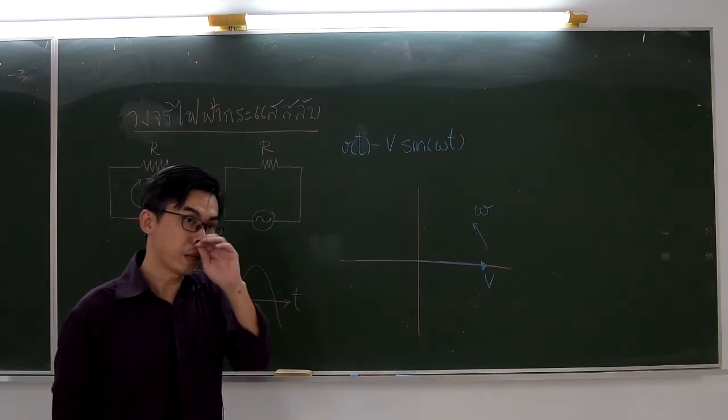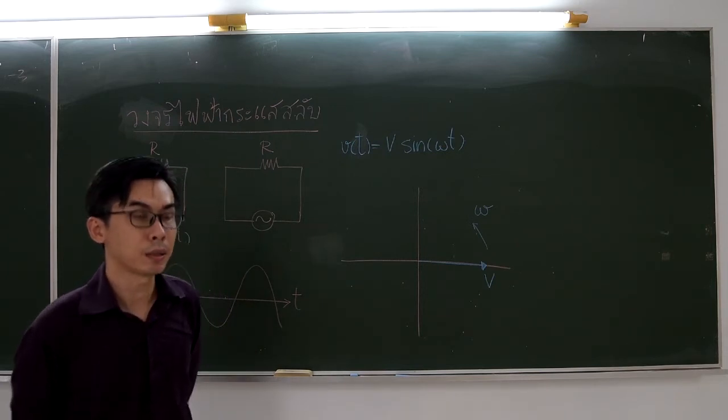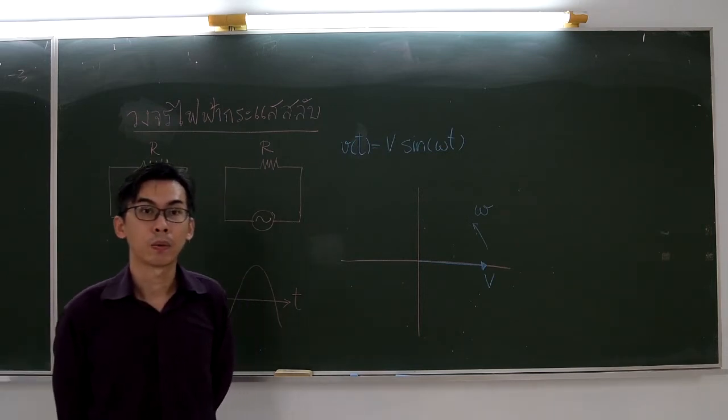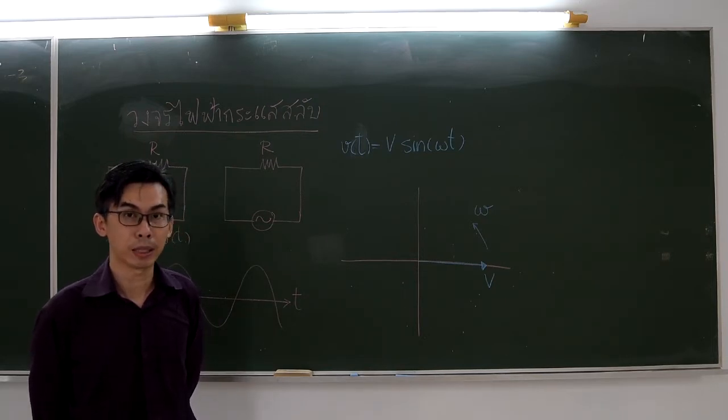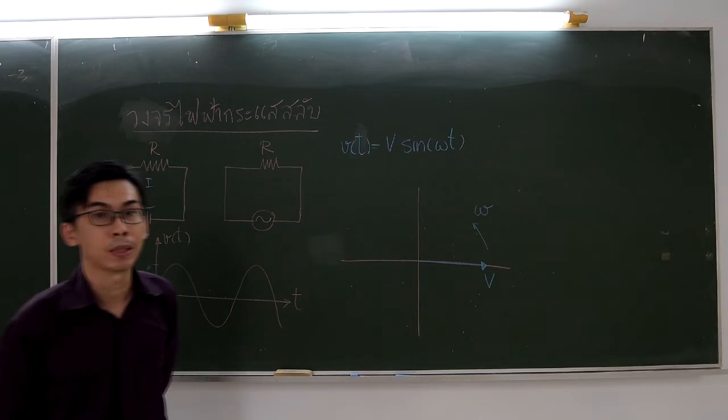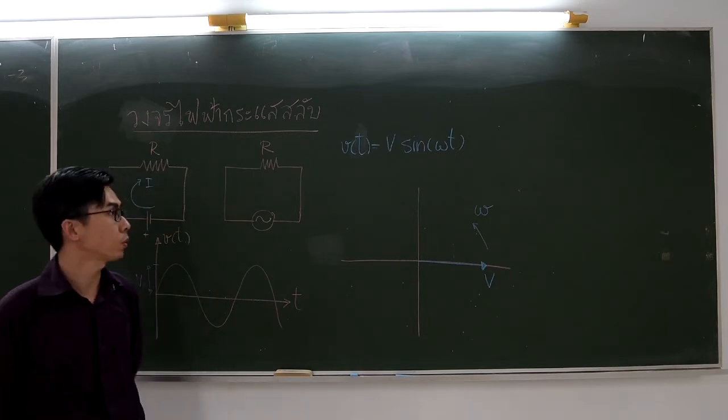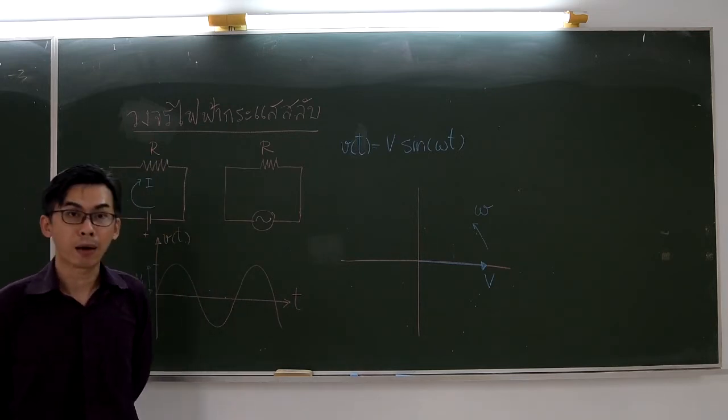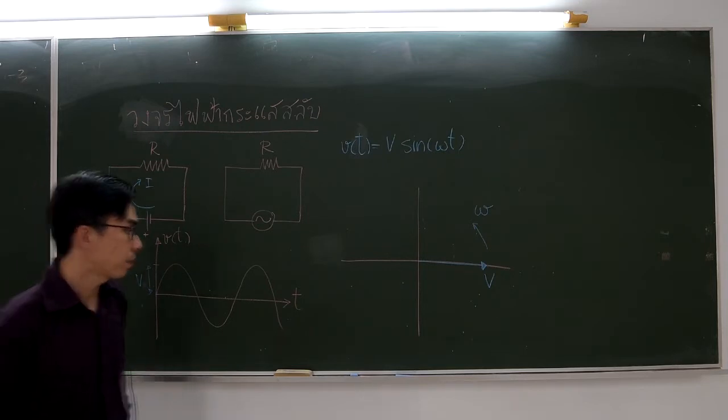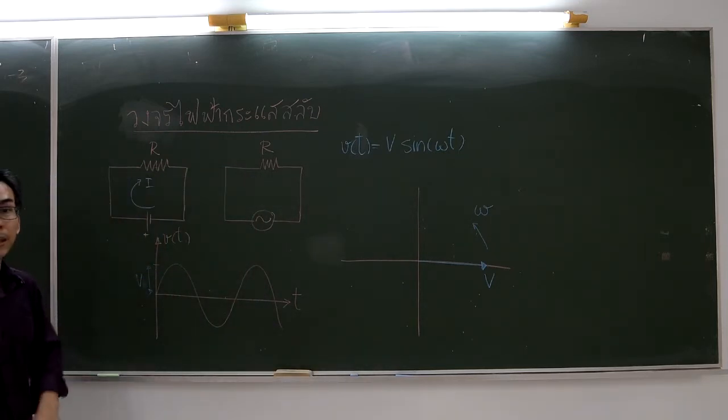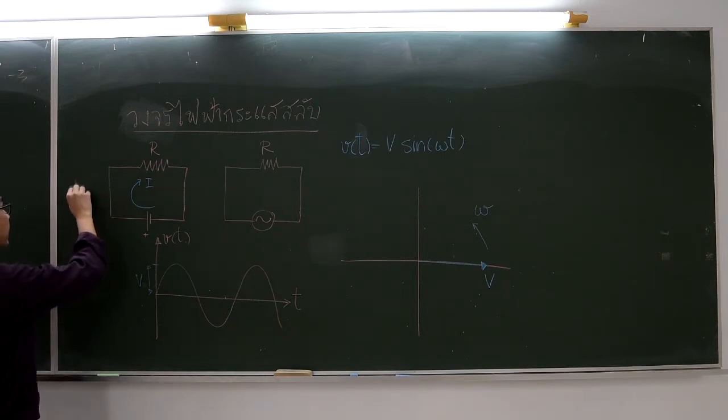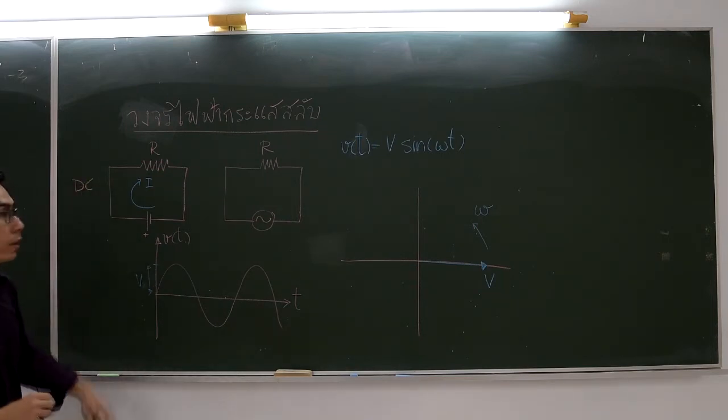Before we discuss resonance, let's clarify what is an AC circuit. There are two types of circuits. A DC circuit stands for direct current circuit, and the other is an AC circuit which stands for alternating current.